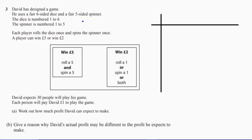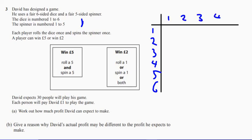We've got a dice and we've got a spinner. So the dice is framed, and we've got one, two, three, four, five, six. The spinner is spun: one, two, three, four, five.